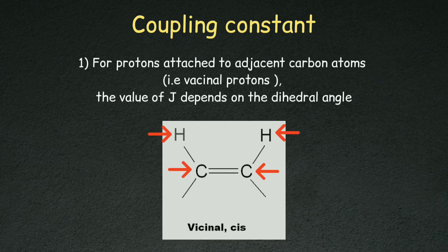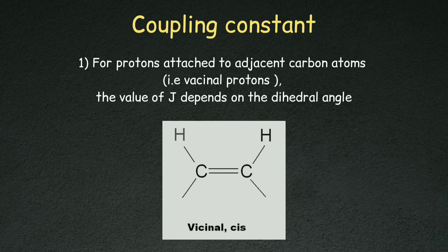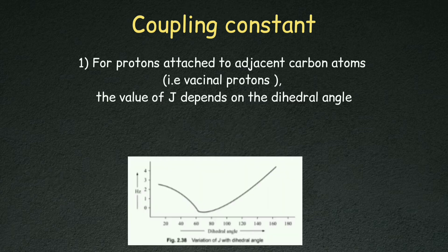When a proton is adjacent to carbon atoms — that is, attached to a carbon atom which is itself attached to another carbon bearing a hydrogen — we call those the next-neighbor protons. We call the coupling between these protons vicinal coupling.